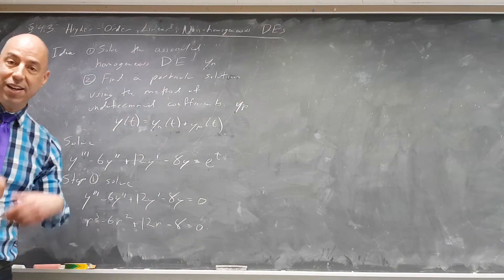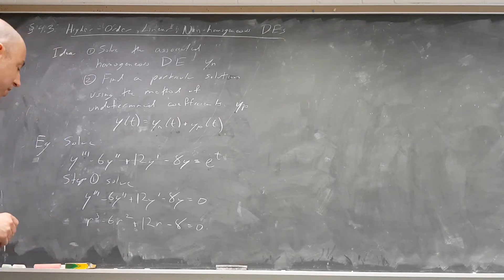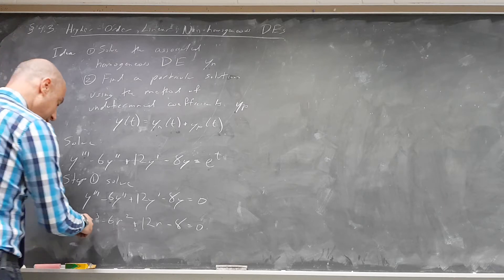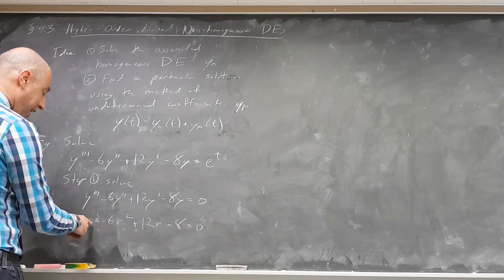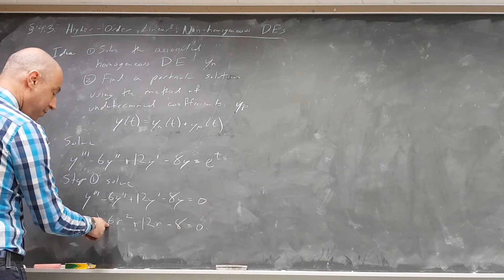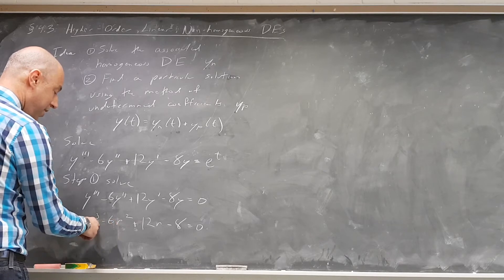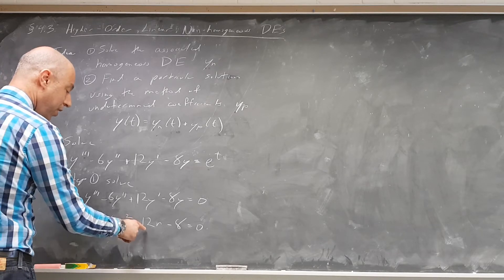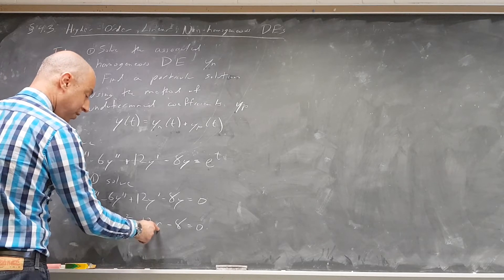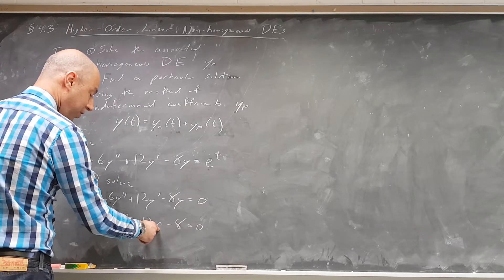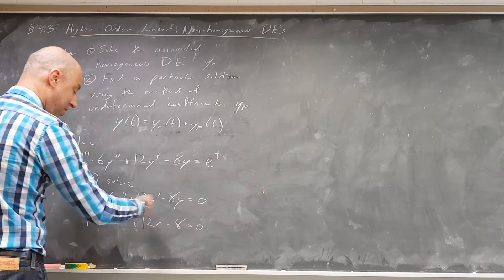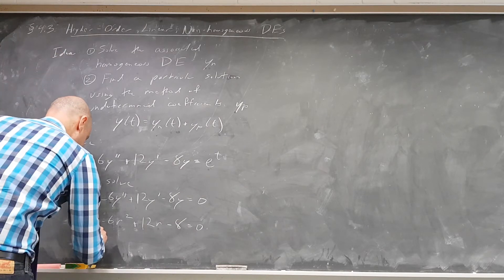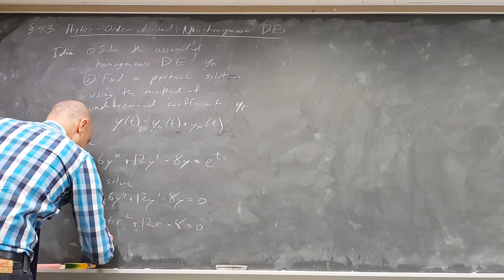You can try to factor it by hand. You can feel free to use some sort of computer algebra system. So if we plug in 2, we get 2 cubed, which is 8 minus 6 times 2 squared. That's 8 minus 24 plus 12 times 2, which is plus 24 minus 8. That all cancels out and gives you 0. So we know that r minus 2 is a factor. We know that 2 is a root.